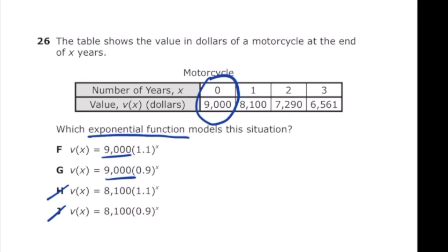Next I'm going to look to see is our function increasing or decreasing. As the years go on we can clearly tell that our function is decreasing because the dollar amount is going down. So that means that our number inside of the parentheses has to be less than 1. Looking between F and G I can see that letter G has 0.9 which is less than 1. So letter G is our answer.